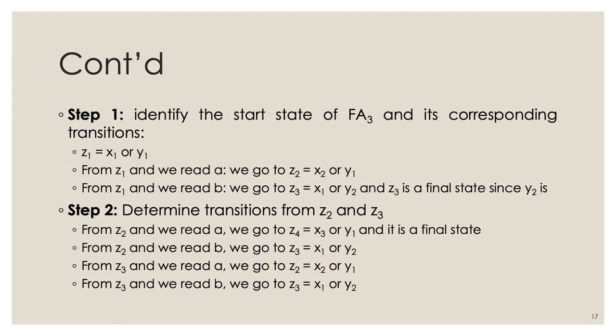We continue to determine transitions out of Z2 and Z3. From Z2 reading 'a' we go to new combination Z4, equal to X3 or Y1. Z4 is final because X3 is final. From Z2 reading 'b' we go to Z3, which we have already seen. From Z3 reading 'a' we go to Z2, already seen. From Z3 reading 'b' we remain in Z3.